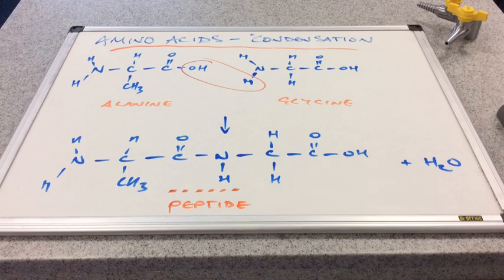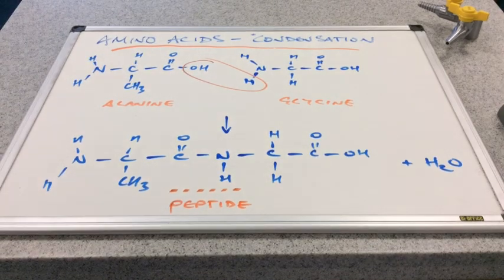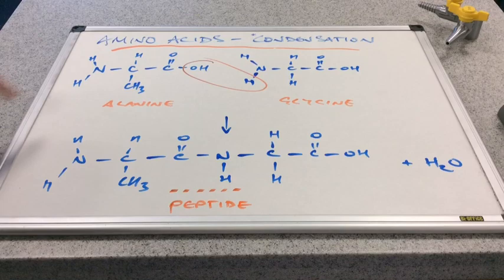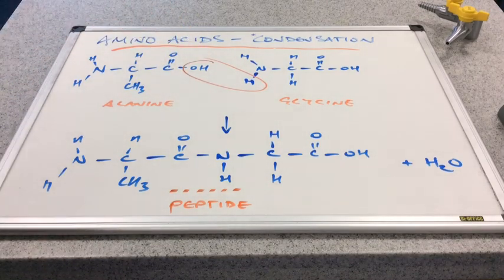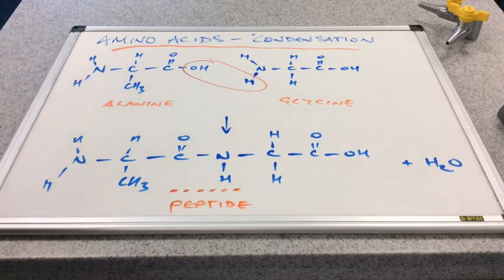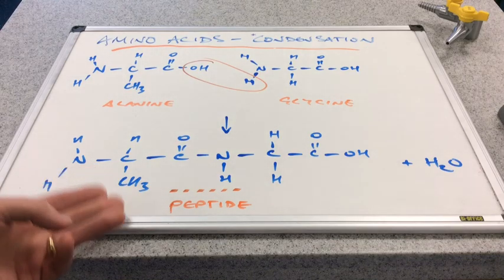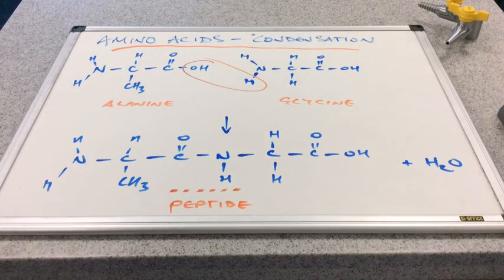Now you can see in this example I've taken the hydroxyl group from the COOH, the carboxylic acid group, from the alanine molecule. And I've taken the hydrogen from the NH2 group of the glycine molecule and ended up with this di-peptide molecule here.